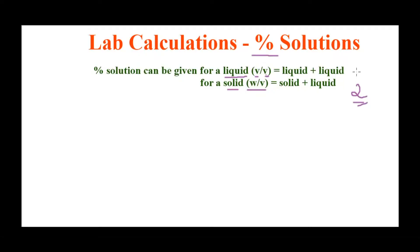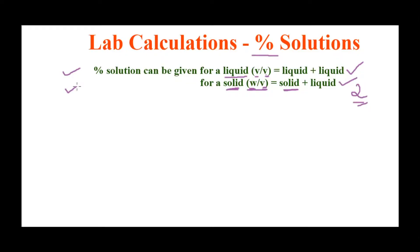Volume by volume means you mix two liquids to get your desired percentage. If it's a solid, you weigh the solid substance and dissolve it in your desired solvent — that is expressed as weight by volume: weight for the solid and volume for the liquid solvent. Today we'll see examples with two liquids and also with solid plus liquid.